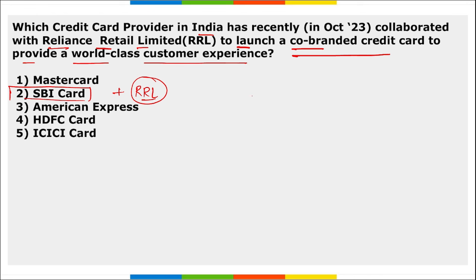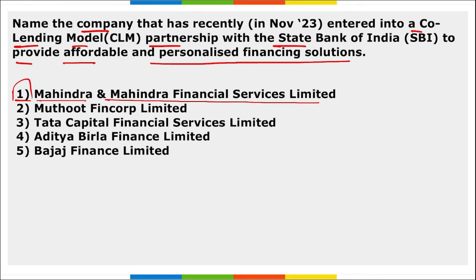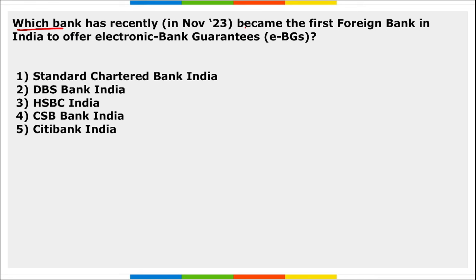Next: name the company that recently entered into a co-lending model partnership with SBI to provide affordable and personalized financing solutions. It is Mahindra and Mahindra Financial Services Limited. They entered into a co-lending partnership with State Bank of India. Next: which bank has recently become the first foreign bank in India to offer EBG (electronic bank guarantees)? It is HSBC India.